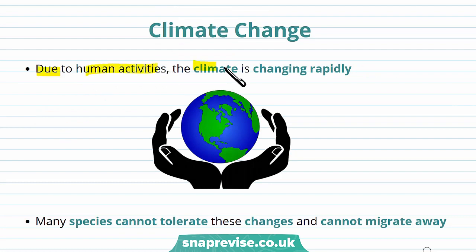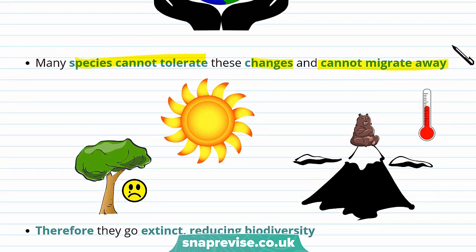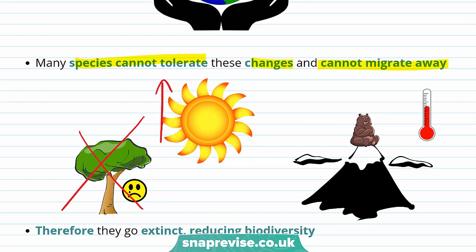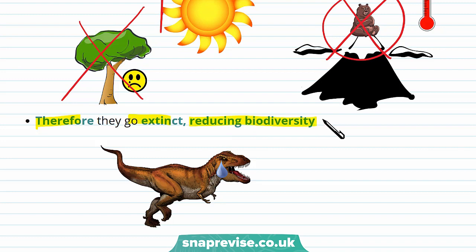Unfortunately, due to human activities, the climate is changing rapidly. Increased use of resources and increased industrial processes lead to more emissions of greenhouse gases, including carbon dioxide. This warms up the planet and causes climate change. Many species can't tolerate these changes and they can't migrate away. For example, rising temperatures mean that some habitats previously suitable for organisms living there are now uninhabitable. Trees cannot migrate or move, so they have to tolerate these changes or die. Some animals may migrate away, but only as far as their habitat reaches, and even then they might not survive. Therefore, these animals go extinct and this reduces biodiversity — which is not only a problem for those animals, but for the human species too, as we rely on high levels of biodiversity for our own survival. This is why we should do as much as we can to reduce the effects of climate change on organisms around us.